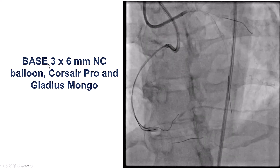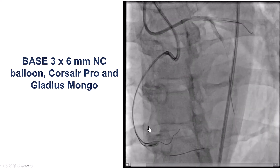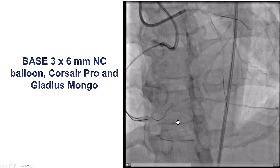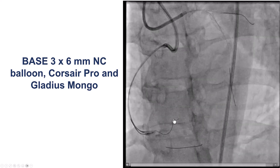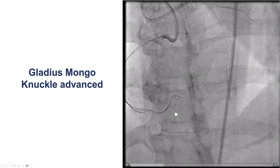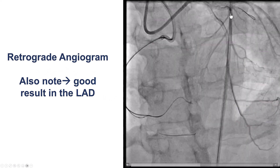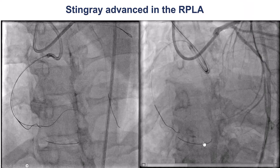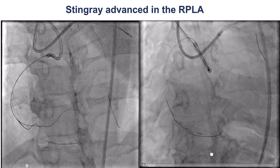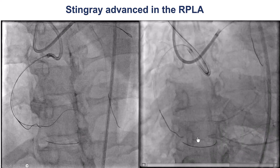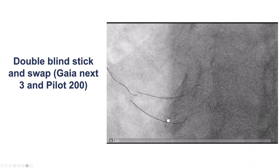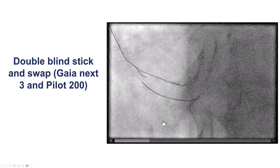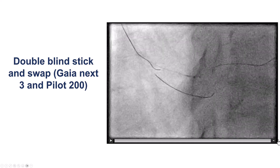We ended up using the BASE technique — balloon-assisted subintimal entry. A 1.5 mm balloon was placed into the posterior lateral, with a microcatheter next to it. Using the Gladius Mongo wire, we penetrated into the extraplaque space and advanced into it, with the wire dancing along the vessel distally — a knuckle placed into the vessel. We delivered a Stingray balloon into the right posterior lateral close to the distal cap, achieving a nice compact balloon position. Using the double-blind stick and swap technique with a Gaia NEXT-2 guide wire, then switching to a PILOT-200, we were able to advance the guide wire into the distal true lumen.